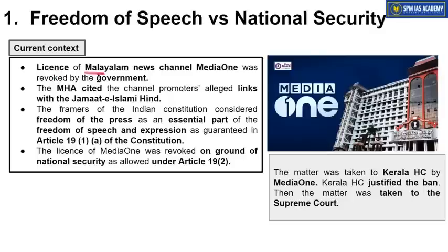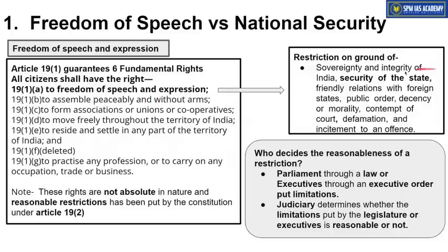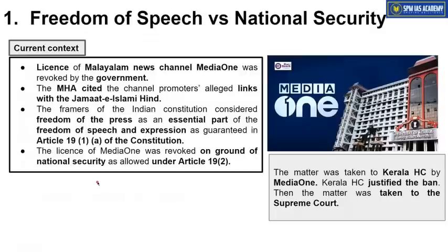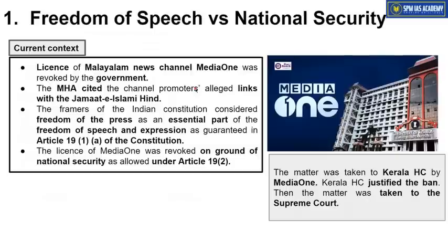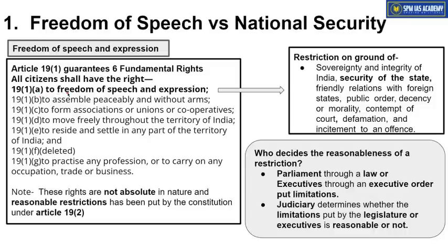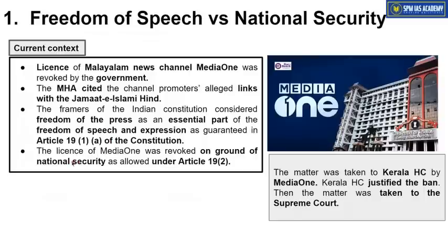Now coming to the current case — Media One. The government revoked the license of this news channel. The Ministry of Home Affairs said that this news channel has links with terror group Jamaat-e-Islami Hind, and therefore using the security of the state restriction under Article 19(2), the channel's license was revoked. Since this channel is part of the press, and freedom of press is a sub-part of freedom of speech and expression under Article 19(1)(a), the freedom of press was curtailed using Article 19(2).